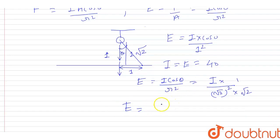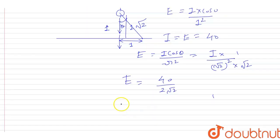I is 40, and this is 2 root 2. Further solving, we get that E is equal to...